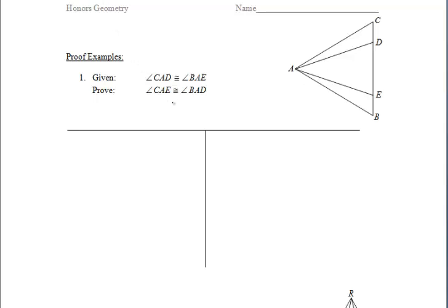Starting again with the second set of notes from section 2.5, let's take a look at our first proof example. We're given that angle CAD is congruent to angle BAE, so let's make sure we put our tick marks in our diagram — that's the most important thing. We want to prove that angle CAE is congruent to angle BAD.